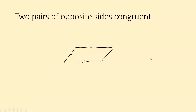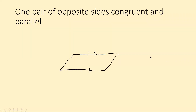Two pairs of opposite sides congruent means this side is congruent to this side, and this side is congruent to this side. Make sure you have this in your notes.